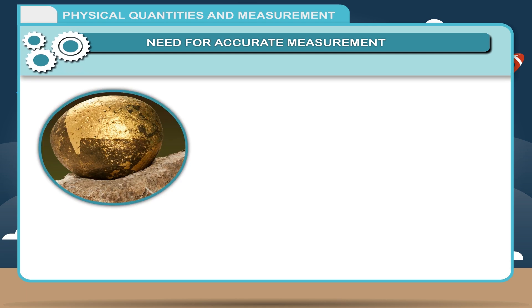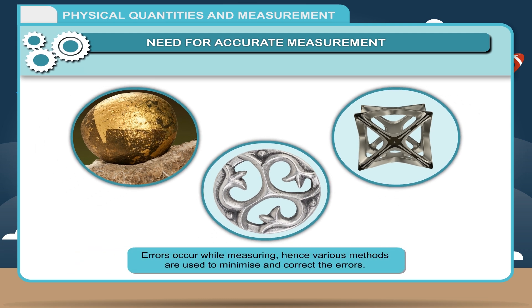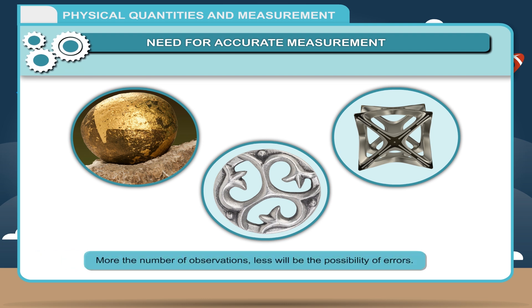Expensive metals like gold, silver and platinum are weighed extremely accurately. Often, errors occur while measuring, hence various methods are used to minimize and correct the errors. More the number of observations, less will be the possibility of errors.